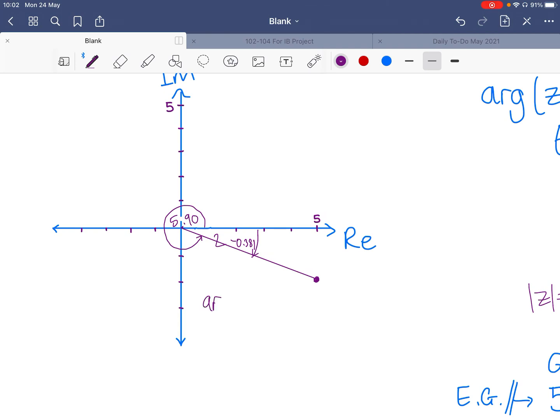So you'll do your arctan of the imaginary part over the real part, and you'll add 2π in the fourth quadrant.